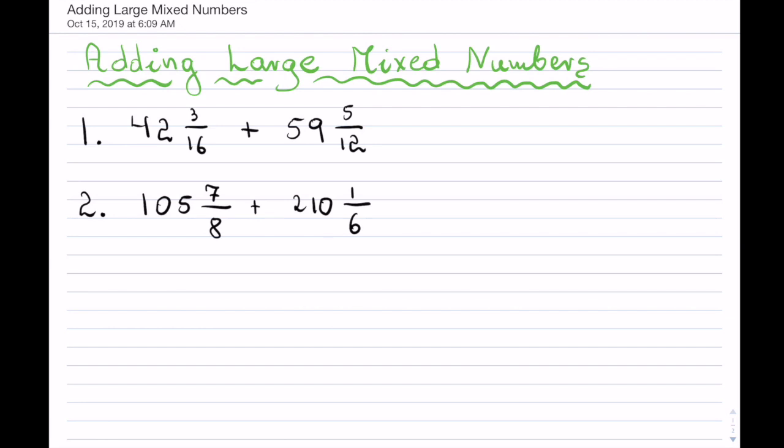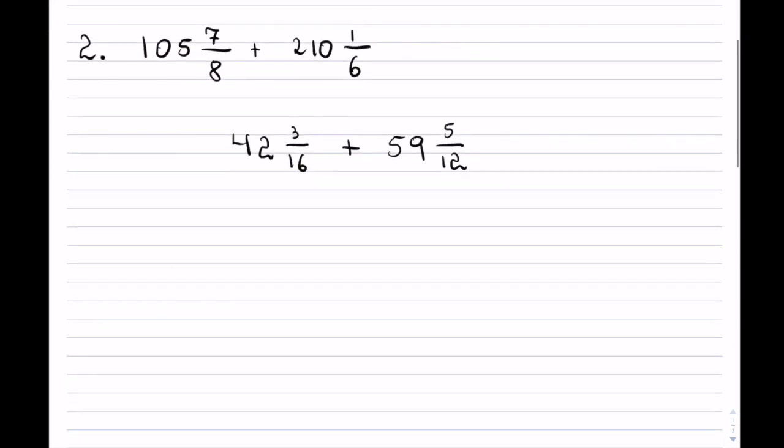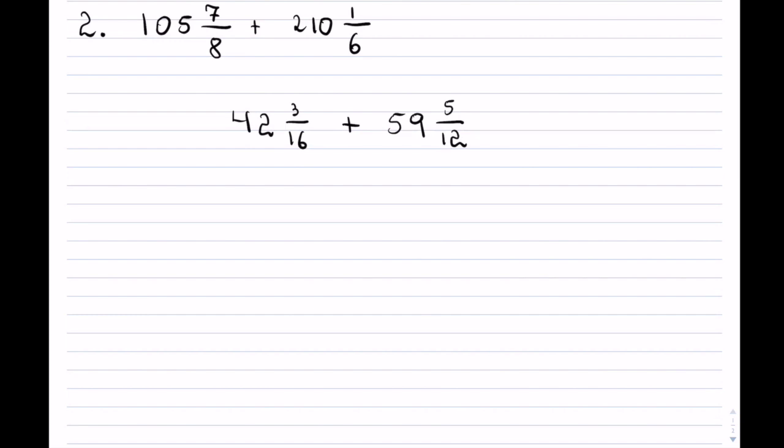When you are dealing with adding larger mixed numbers, there is an advantage of just simply working with the whole components as one and working with the fractions separately. So what I mean by that is that whenever you are having mixed numbers and you are adding them together, you can literally just simply take your two whole components, and that will be 42, and add them up.